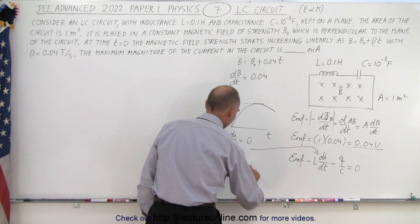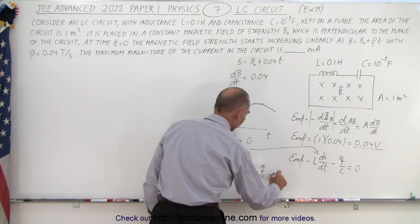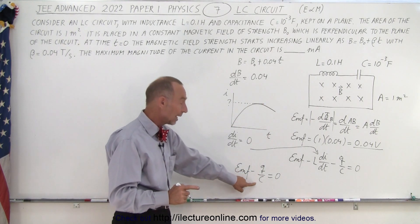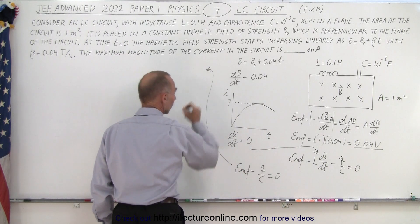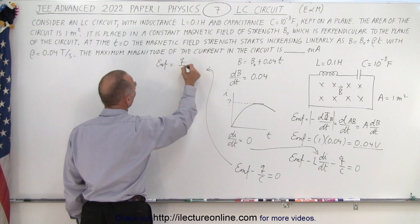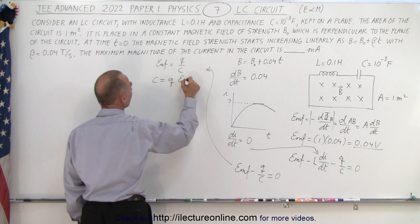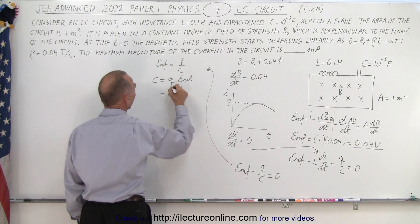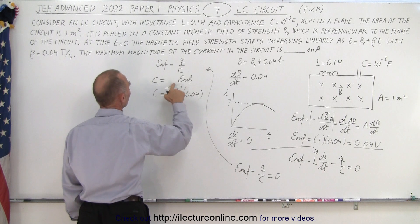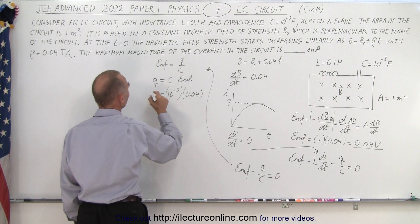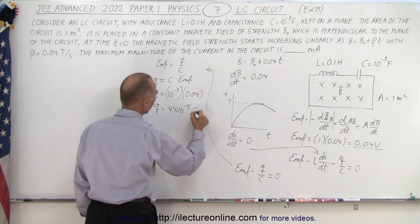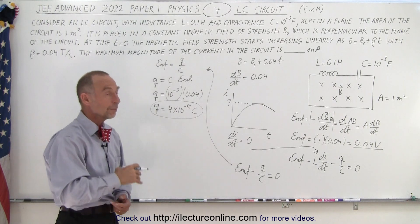At maximum current, the equation becomes EMF minus Q over C equals zero. We can then find how much charge is on the capacitor, since we know the EMF is 0.04 volts and the capacitance. Solving for Q: Q equals C times EMF, so Q equals 10 to the minus 3 times 0.04, giving Q equals 4 times 10 to the minus 5 Coulombs. That's the charge on the capacitor when maximum current is reached.